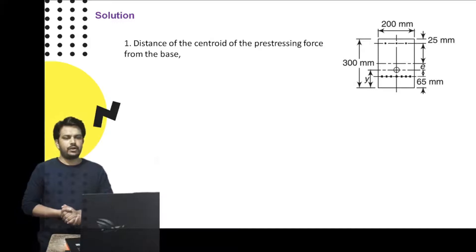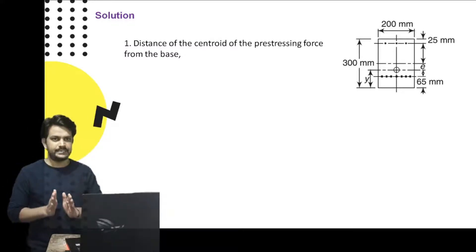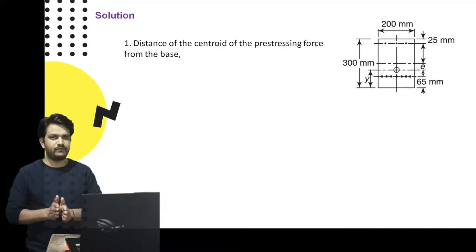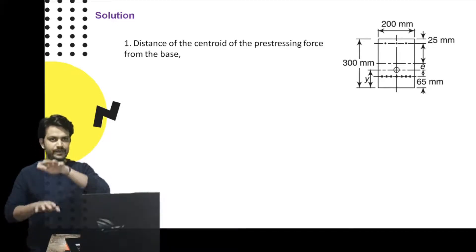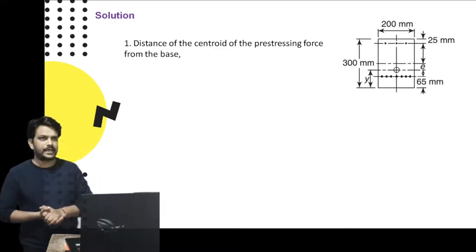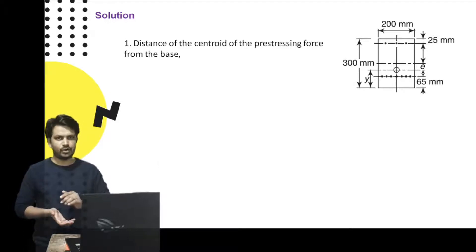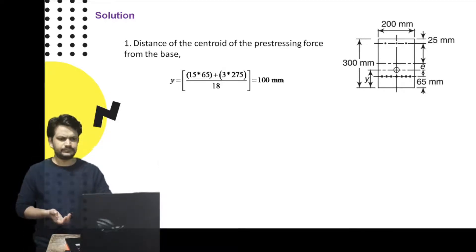First, we need to find the distance of the pre-stressing force from the neutral axis — the resultant of the pre-stressing force. The beam is pre-stressed by 15 wires at the bottom and 3 wires at the top, so somewhere in the cross-section there must be a position of a resultant pre-stressing force P. We find it using the formula similar to finding Y-bar.